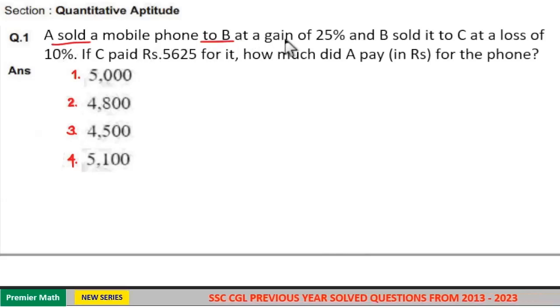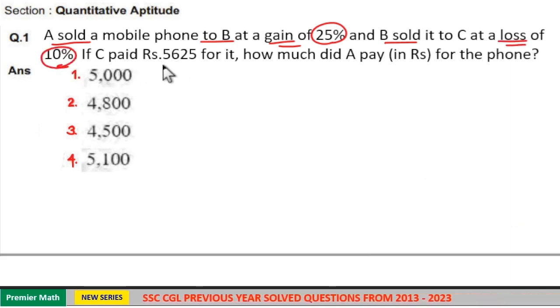A sold a mobile phone to B at a gain of 25% and B sold it to C at a loss of 10%. If C paid rupees 5625, how much did A pay for the phone?